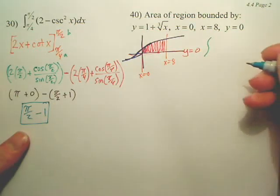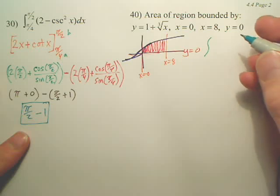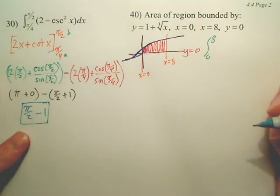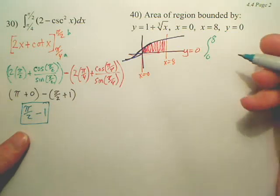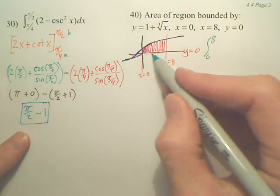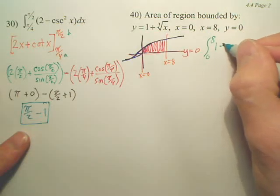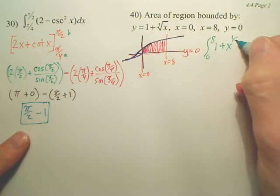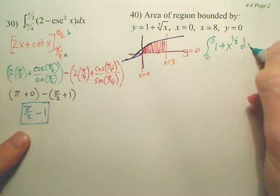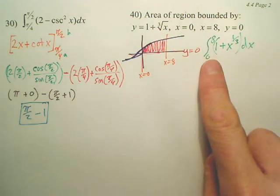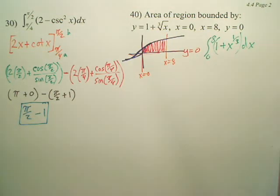Isn't it from 0 to 8? And aren't we just going from this line to the x-axis? So, isn't that just 1 plus x to the one-third dx? All of this is basically just saying that. You just got to kind of look at the graph, think about the graph, think about the intervals.